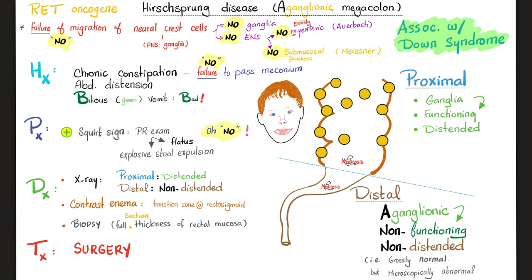Next we have Hirschsprung disease, also known as aganglionic megacolon. Mega means big colon; aganglionic means without ganglia — part of the colon is born without ganglia. Therefore, there is no myenteric plexus and no submucosal plexus. The parasympathetic and sympathetic will be unable to communicate with the colon, and it also lacks the enteric nervous system. When this part of the colon cannot contract, you will not be able to defecate, leading to failure to pass meconium — the stool of a newborn.